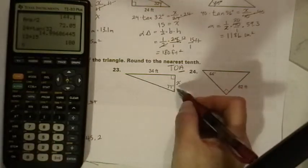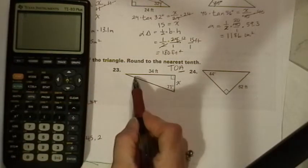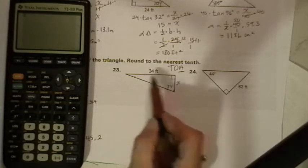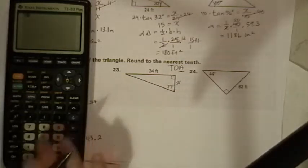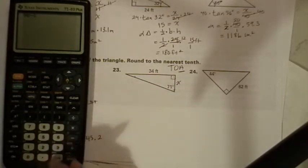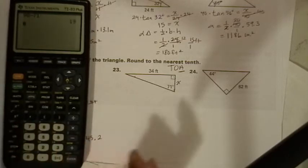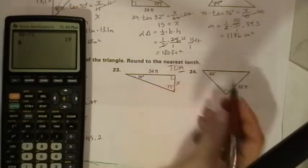So we're going to subtract and find the degrees of this angle. This is 90, so these two together are 90. 90 minus 71 is 19. So this is a 19 degree angle here.